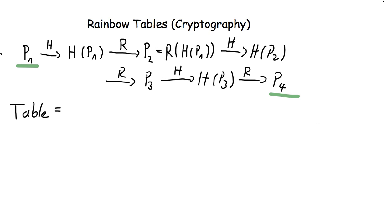is just a set of pairs where each pair contains the starting word and the word at the end of the chain. And we do this for a lot of other starting words. So we get a set of pairs.